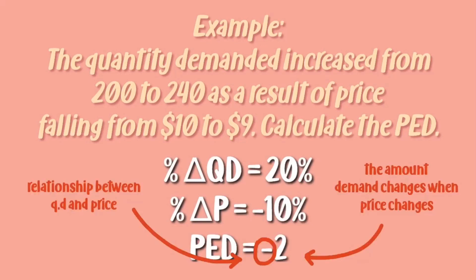The symbol, whether it's positive or negative, represents the relationship between the quantity demanded and the price. Whereas the number represents the amount demand changes when price changes. So for this example, when the price increased by 1, the demand would decrease by 2, and vice versa.